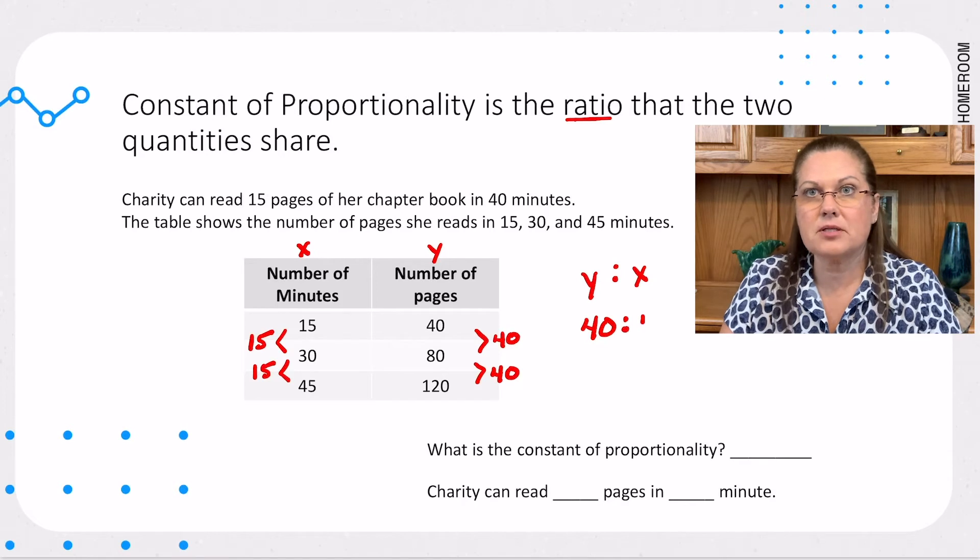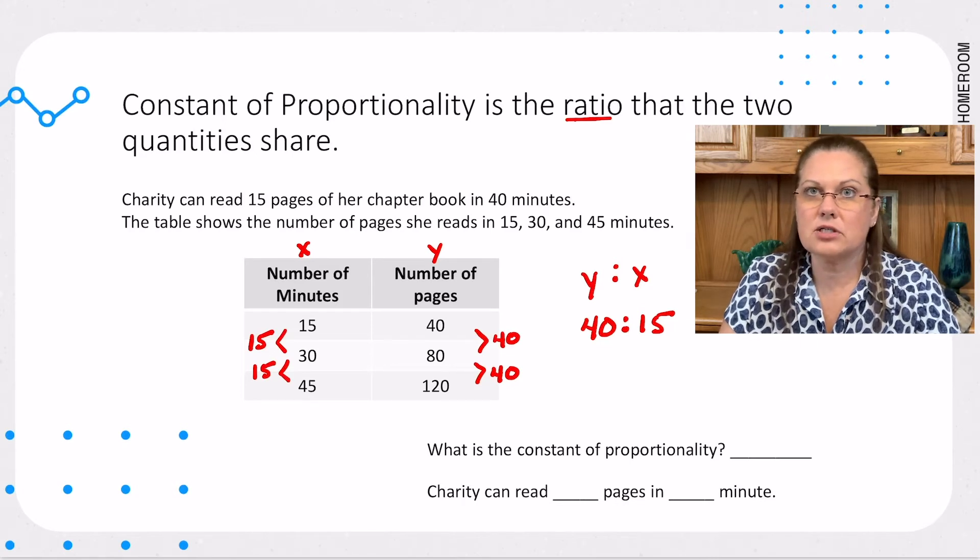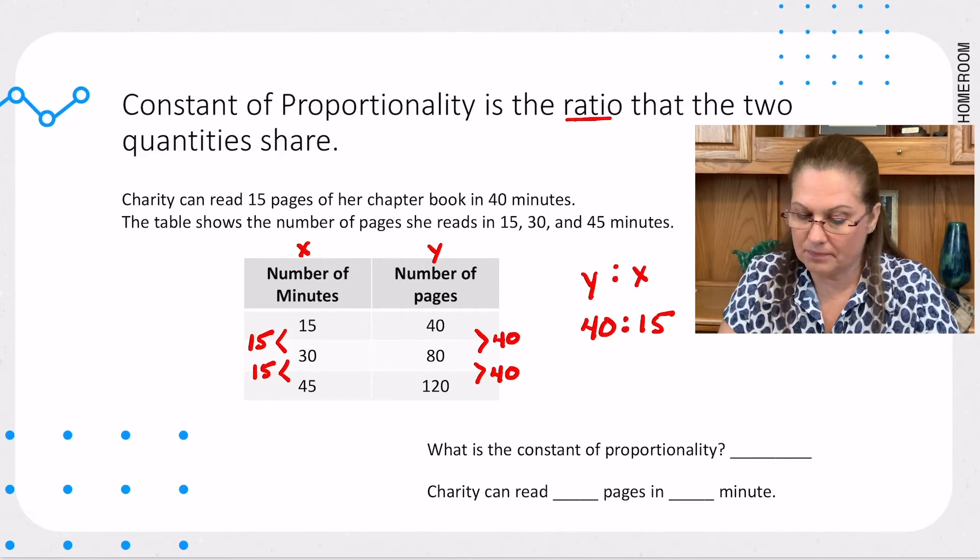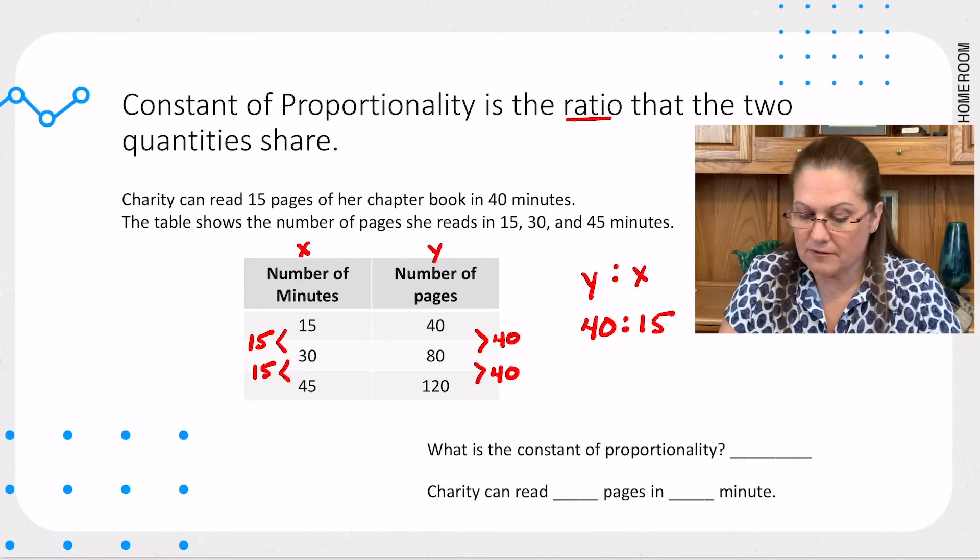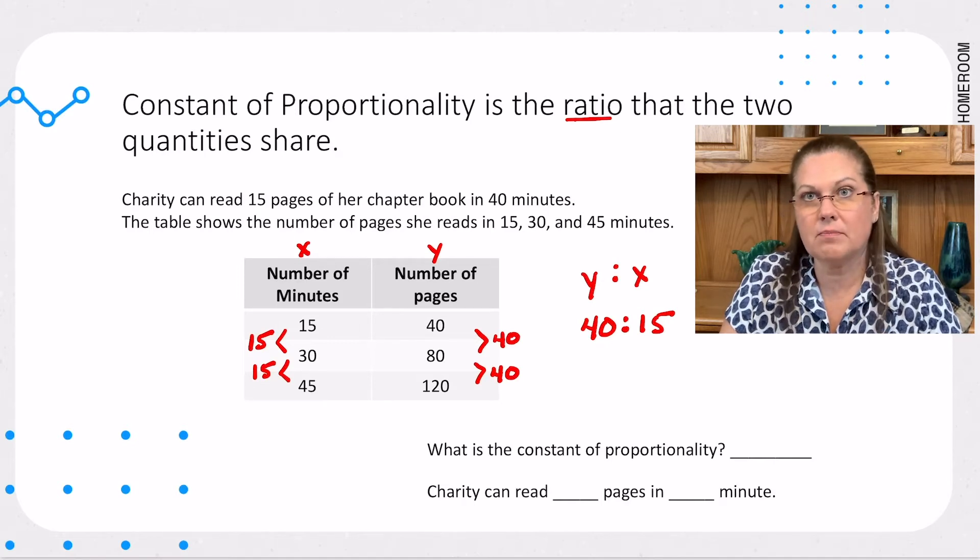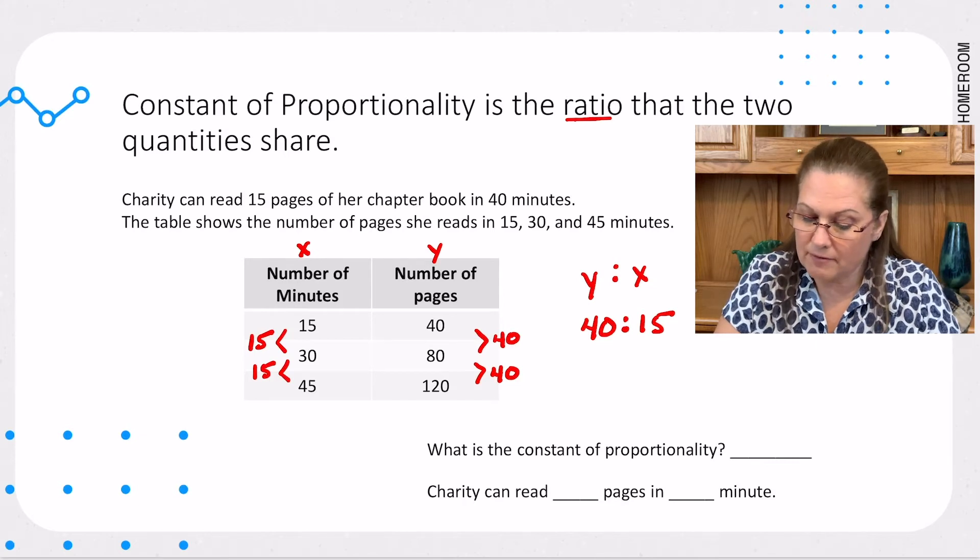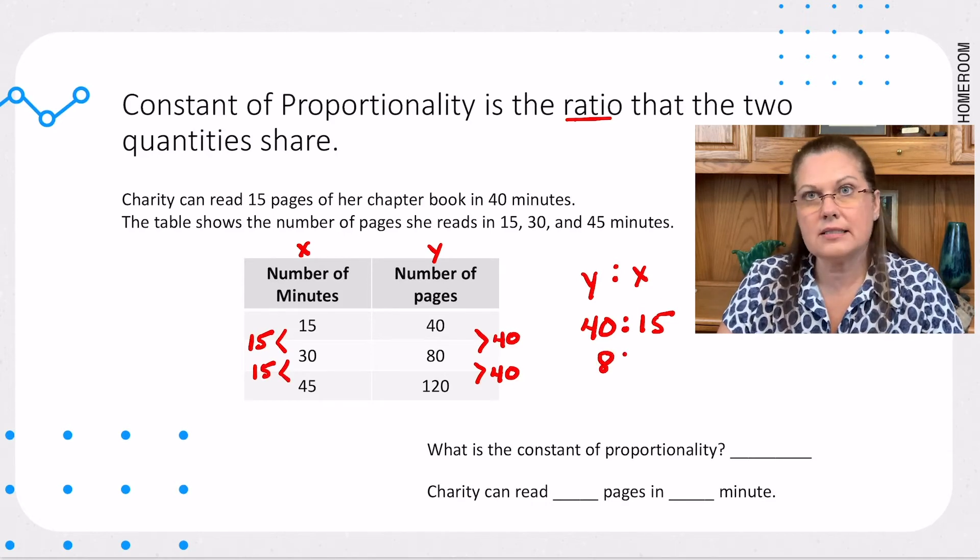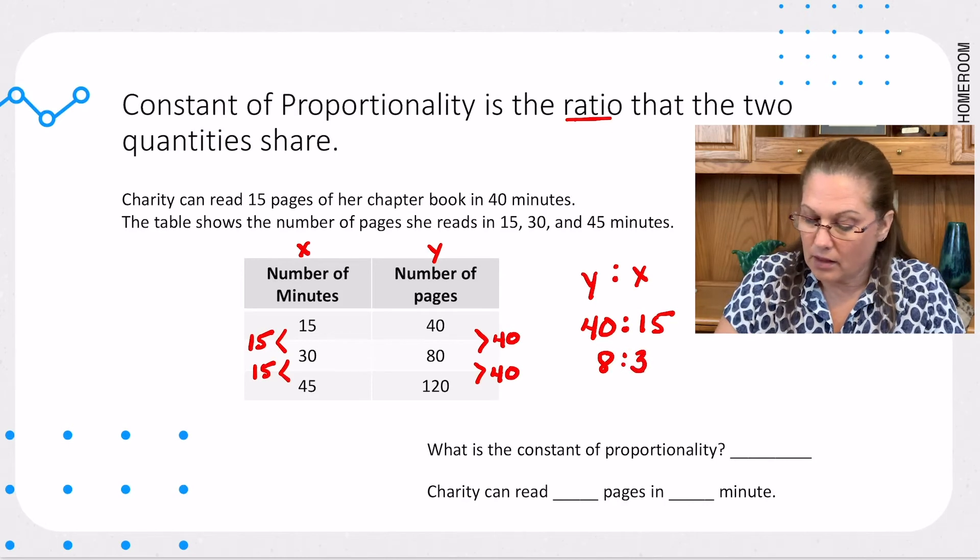Can we simplify this? Absolutely. And we really need to take it down as far as we can go. Sometimes we can take it down to unit rate or sometimes we can get it close. It all depends on what you're really looking for as your answer. I know 40 and 15 can both be divided by 5. So, 40 divided by 5 is 8 and 15 divided by 5 is 3. So, what is our constant of proportionality? Our constant of proportionality is 8 to 3.